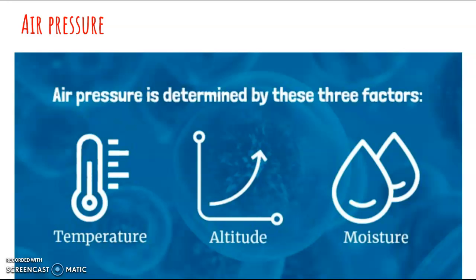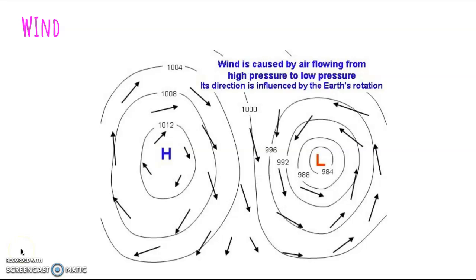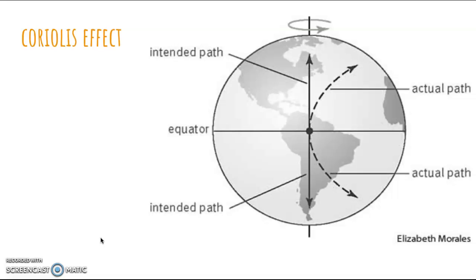This picture shows wind. Wind flow is initiated by air flowing from high pressure to low pressure. Since the earth is rotating, however, the air does not flow directly from high to low pressure, but is deflected to the right in the northern hemisphere and to the left in the southern hemisphere, so that the wind flows mostly around the high and low pressure areas. This shows the Coriolis effect.